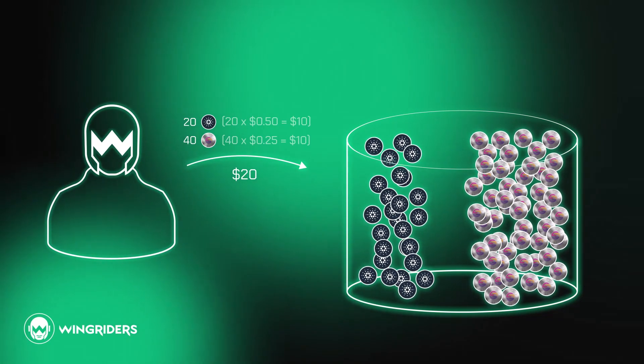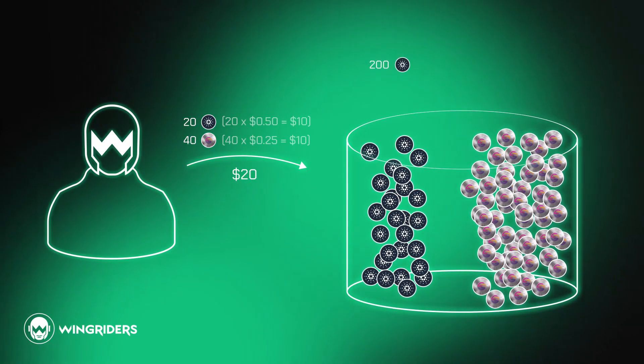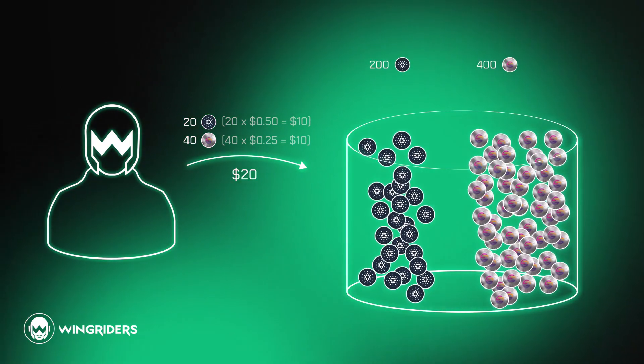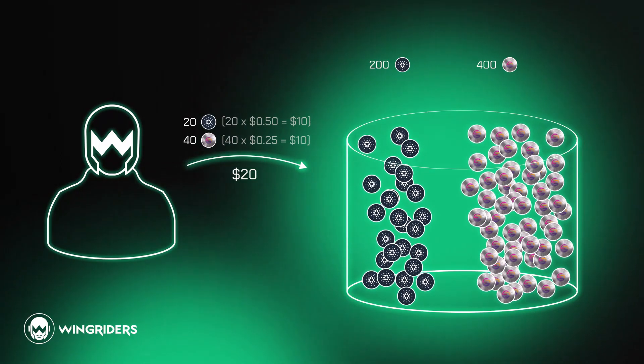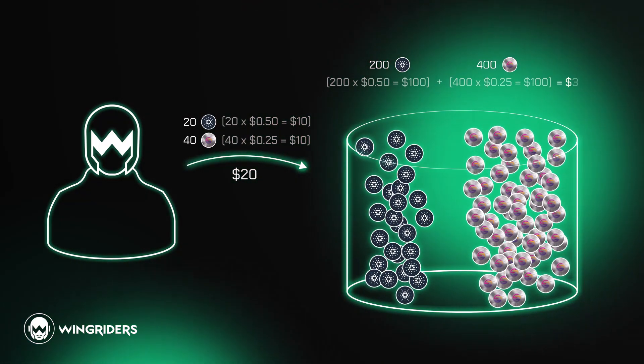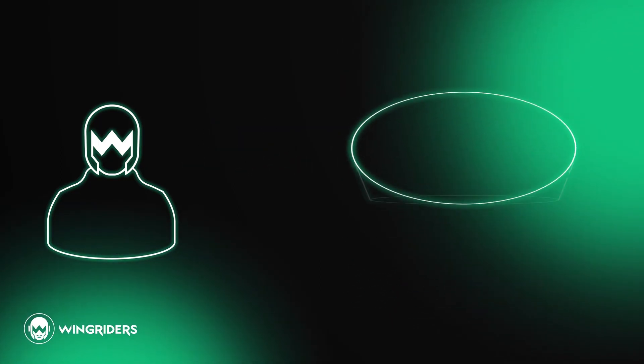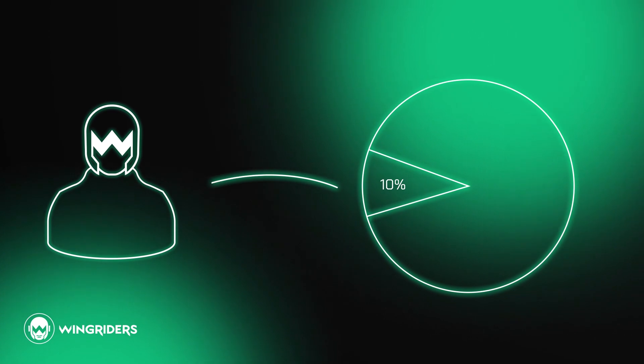Let's work with really small numbers for a better demonstration, and imagine the pool now contains 200 ADA and 400 WMT in total, deposited by all the liquidity providers. So the value of the pool is $200, and $20 of it is yours. That means you're entitled to 10% share of the pool.